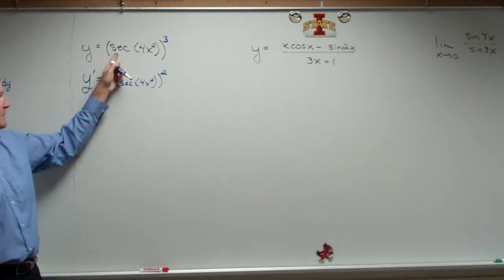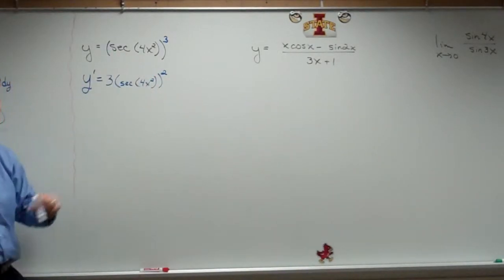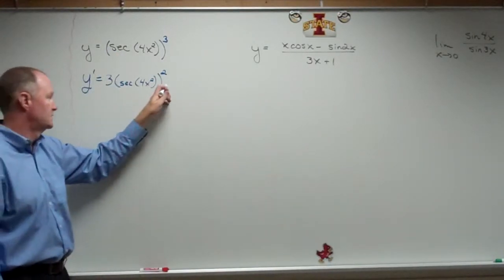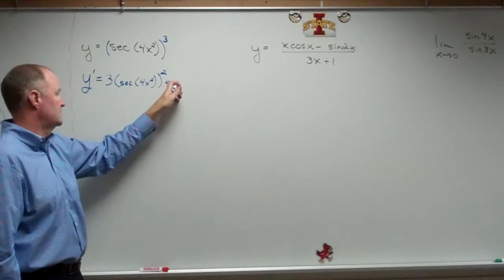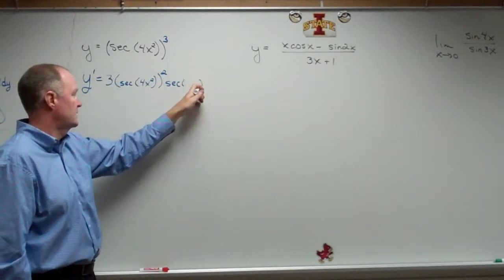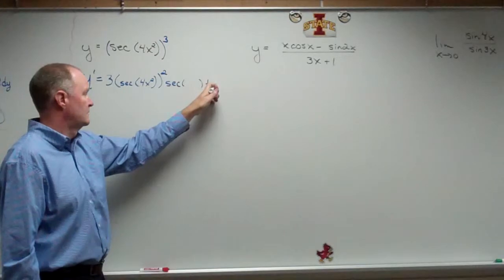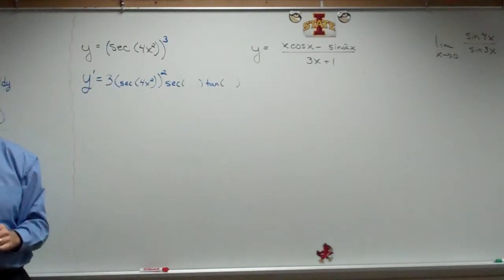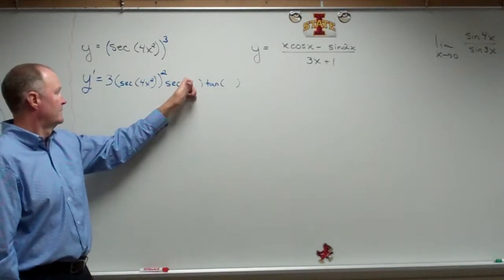Now I'm just worried about the secant and the 4x squared. The secant's the outside. The derivative of the secant is secant times the tangent. And whatever's inside stays the same.